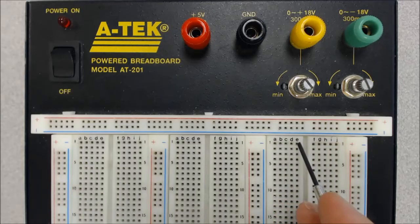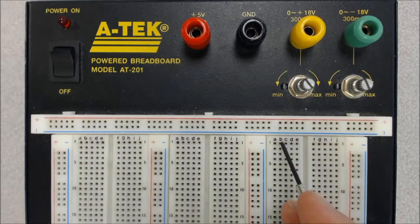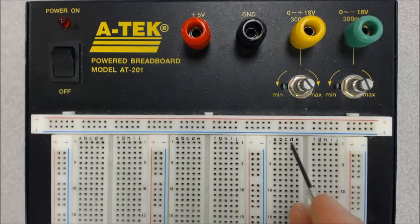But the holes in this row are not connected across this center gap here to the holes in that row. So it's only these five holes here that are connected on this breadboard. Also the holes on this row are in no way connected to the holes on this row here.